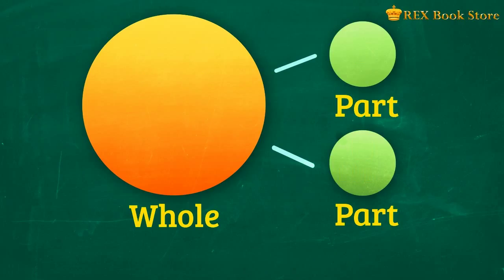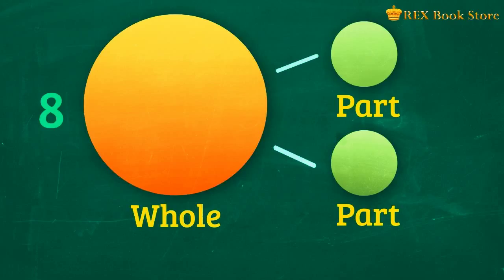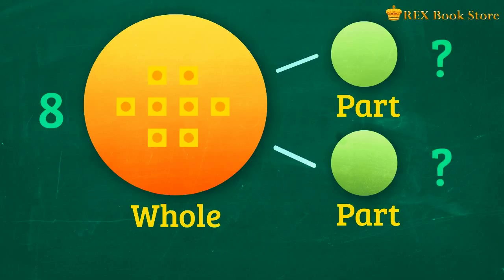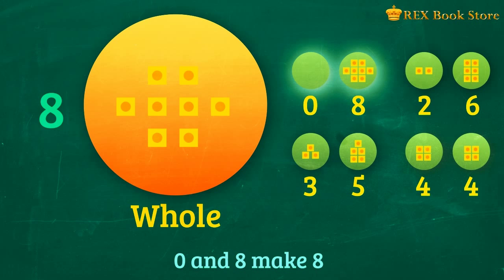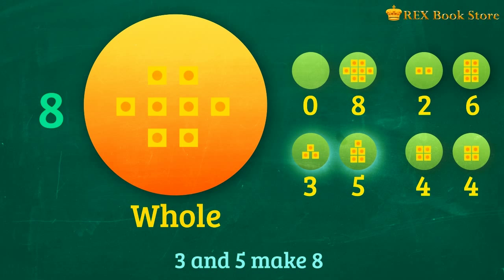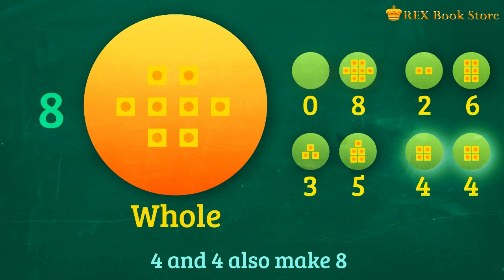Let's have another example. If there are 8 blocks, what number bonds can we make? There's 1 and 7 — 1 and 7 make 8. Can you name other combinations? If you answered any of these pairs, then you're correct. 0 and 8 make 8. 2 and 6 make 8. 3 and 5 make 8. 4 and 4 also make 8.